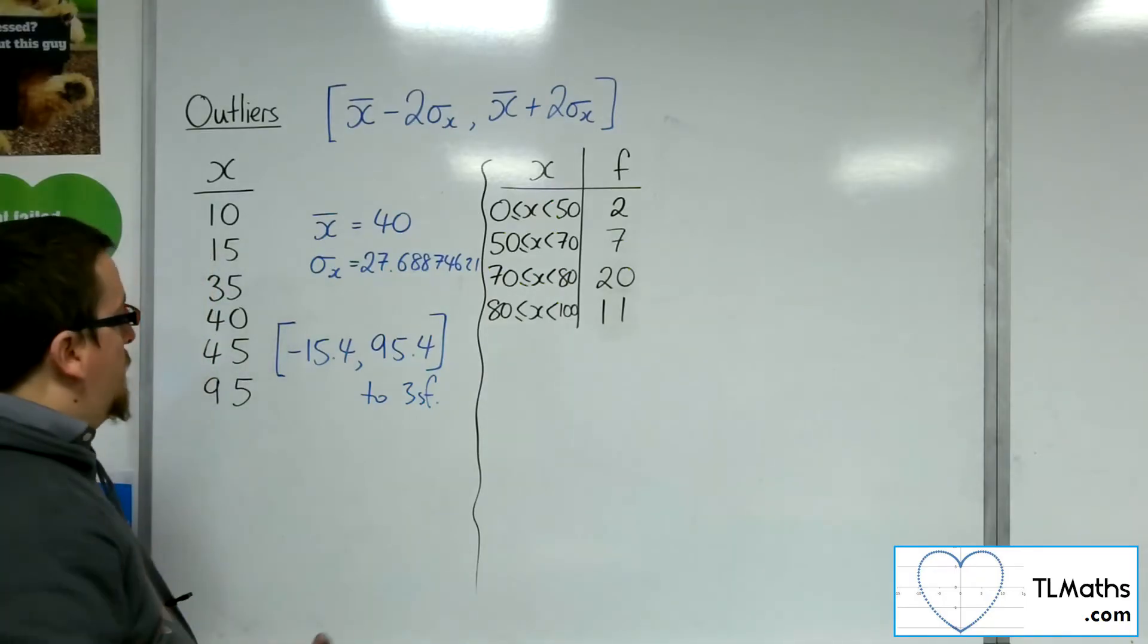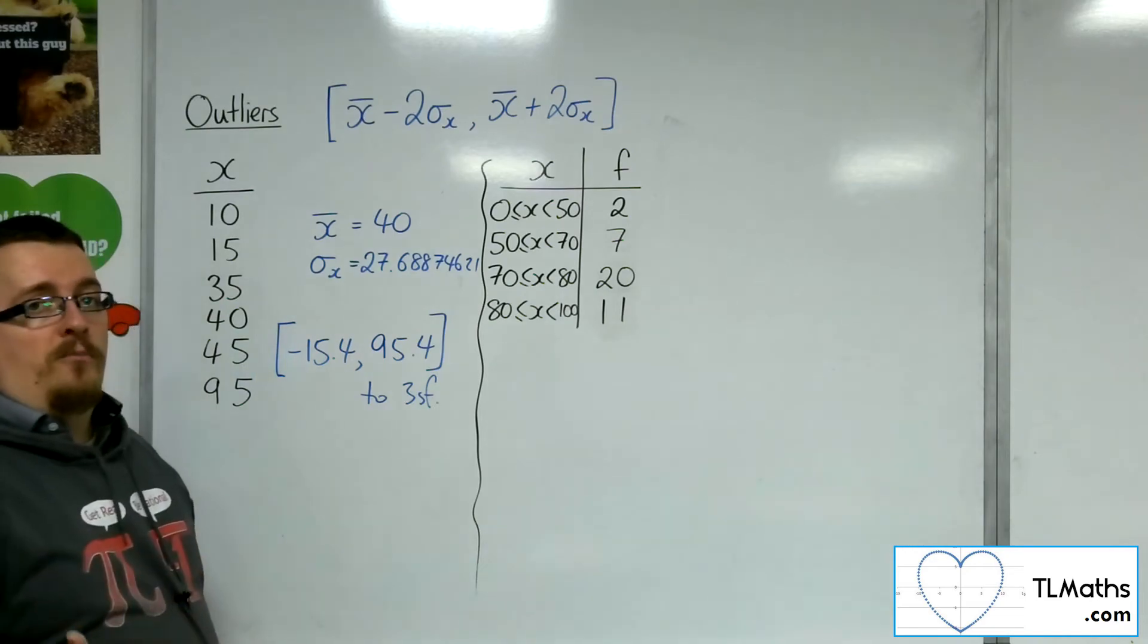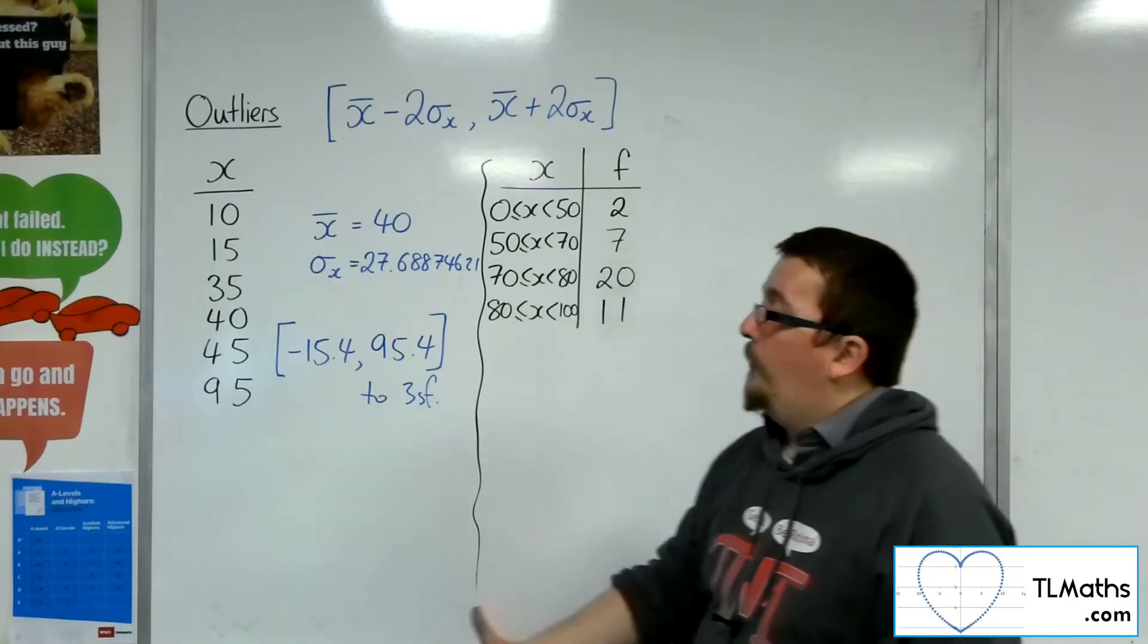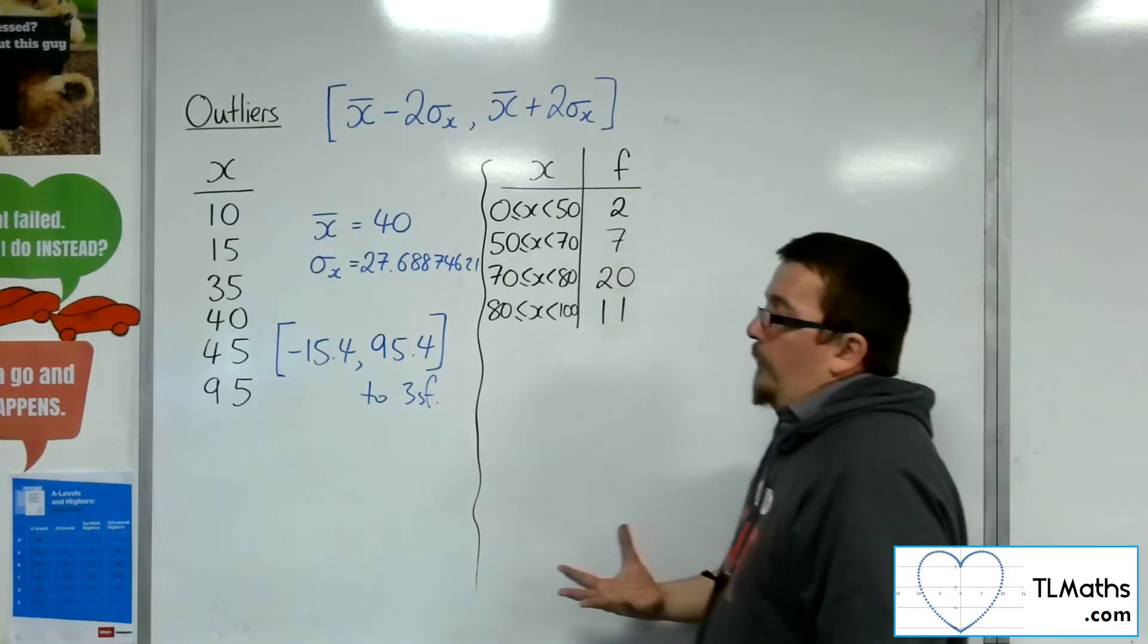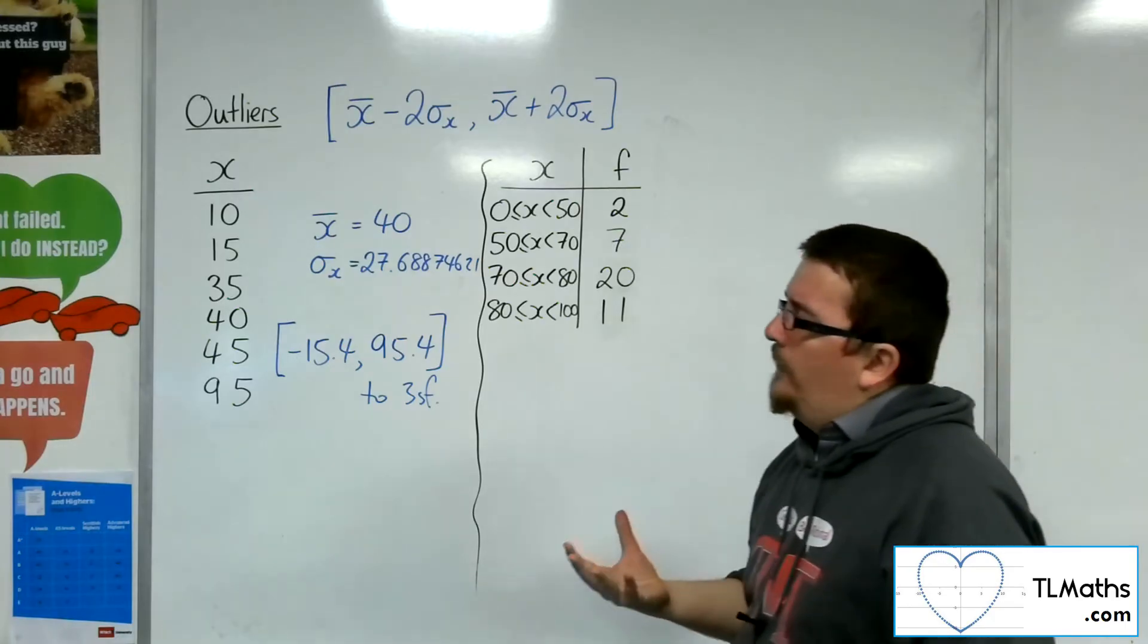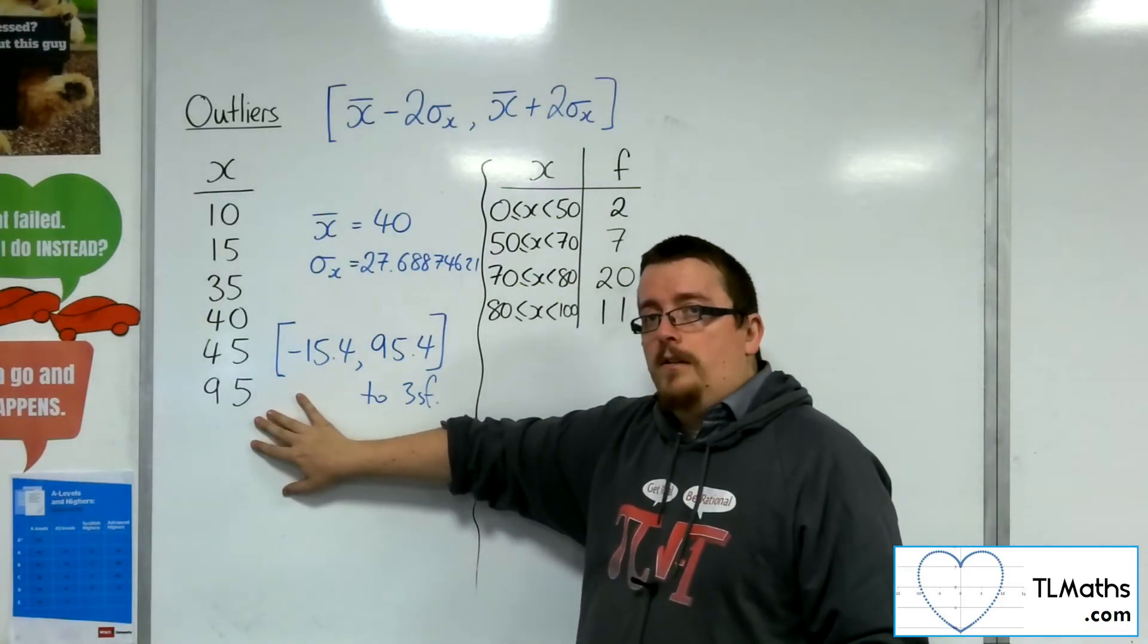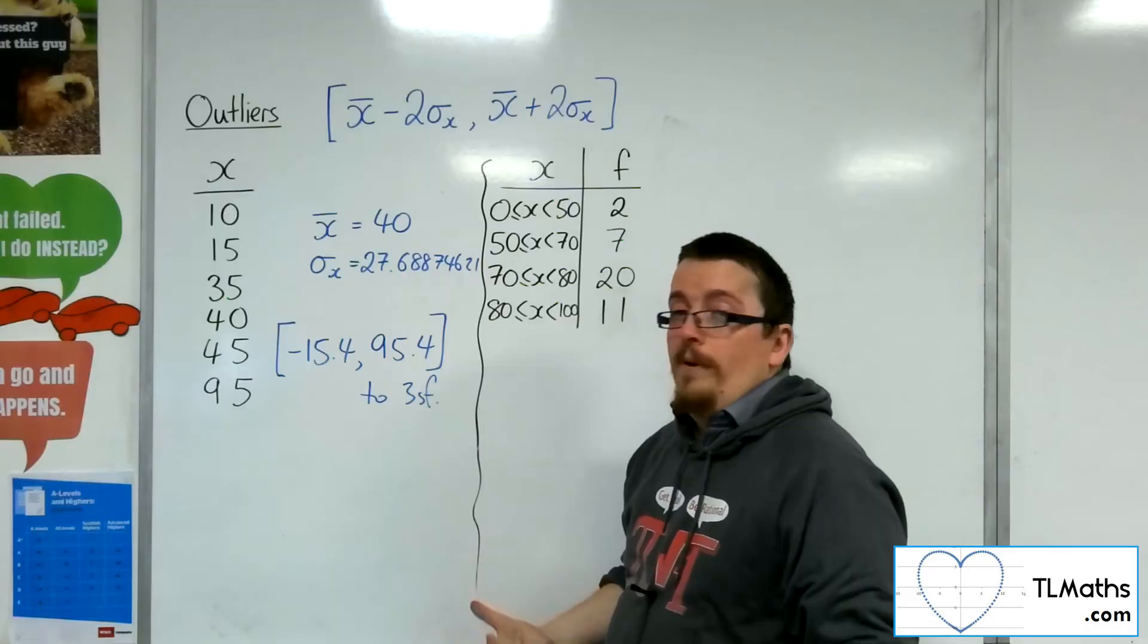So using the mean and standard deviation, I'd be looking at any values less than minus 15.4, which there aren't, and any values that are larger than 95.4, which there aren't. So using the mean and standard deviation, I have not picked out any outliers. You'll notice that in the previous video, I used precisely the same numbers, and I picked out 95 as an outlier using the quartiles. The quartiles method will likely make more sense for a discrete set of data, especially if you're looking at maybe wages of employees in their thousands. It would make more sense to pick out the £95,000 a year salary as an outlier, whereas this method for mean and standard deviation, which is often used for continuous data, will not pick it out.